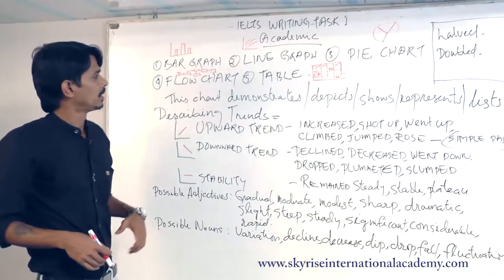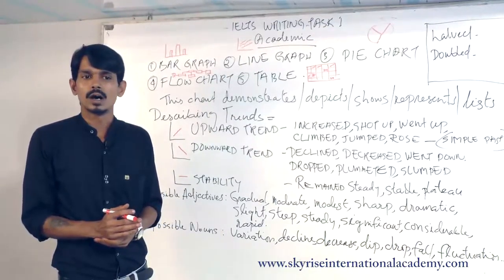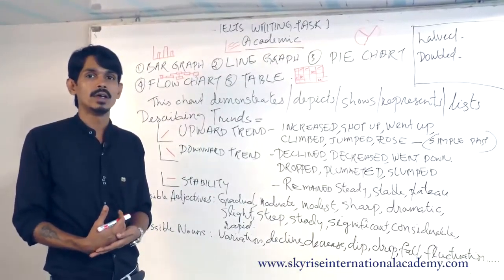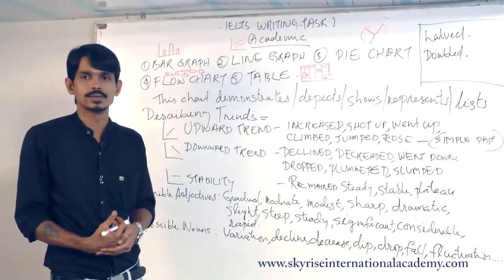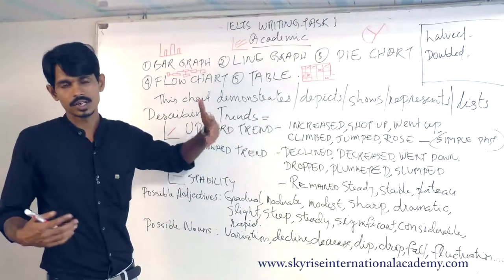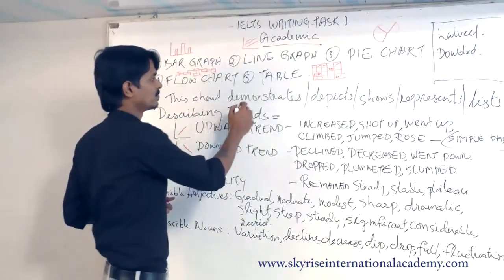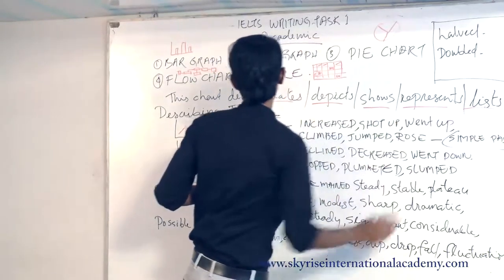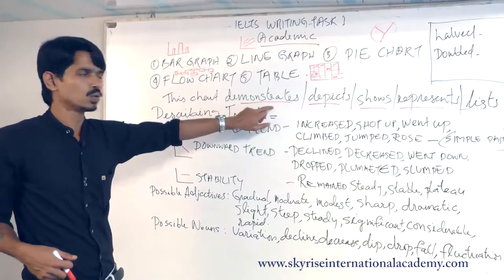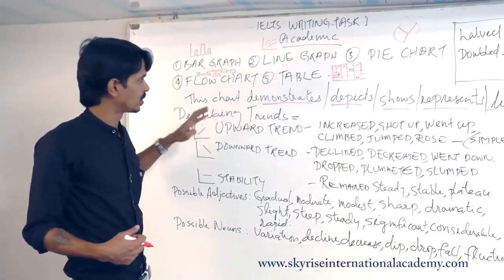When you deal with these charts, there are certain words, phrases, nouns, and adjectives that you need to be aware of when making comparisons and descriptions. You need to represent them in an academic way. The first statement in your introduction — for example, the question will say 'the following chart shows' — and in place of 'shows' you can use: demonstrate, depicts, show, represents, or lists. These are the different variants you can use.